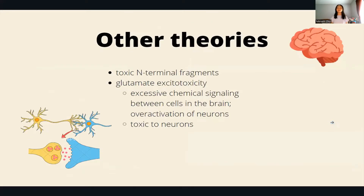The second theory involves a toxic internal fragment — scientists believe the elongated part of the glutamine chain acts as a toxic tail that causes the cell to die. The third theory is called glutamate excitotoxicity, where excessive chemical signaling between nerve cells keeps them constantly activated, causing them to die.